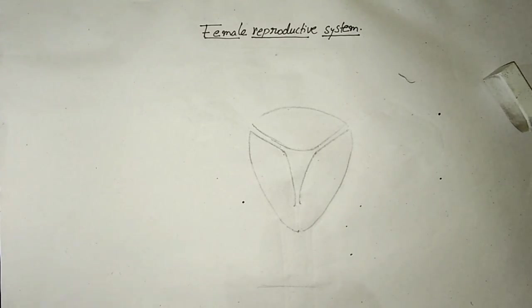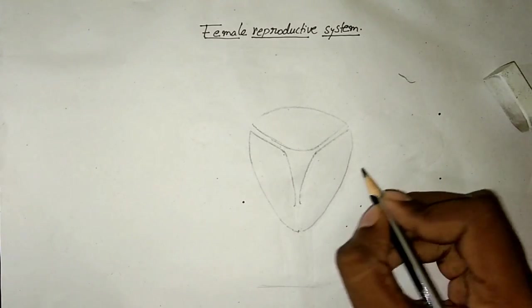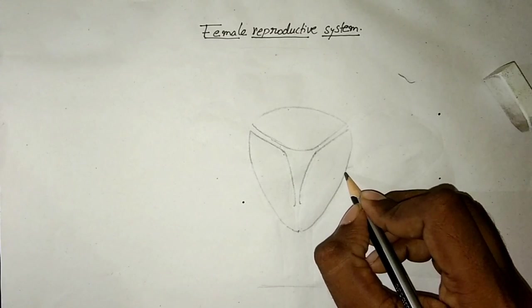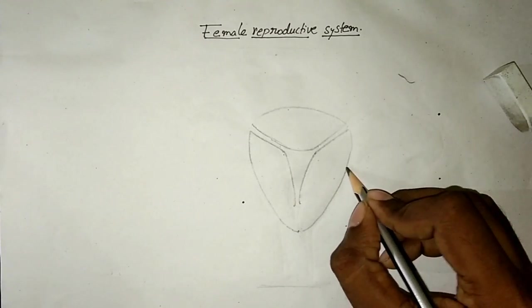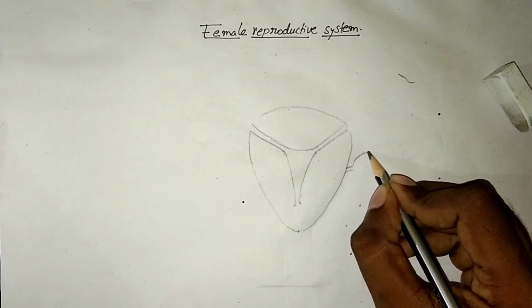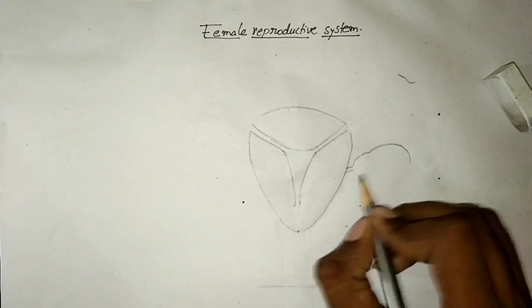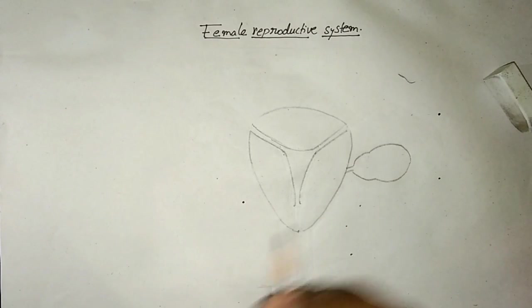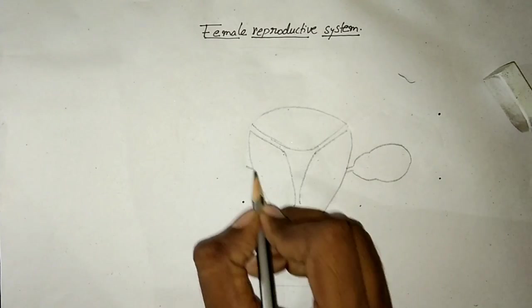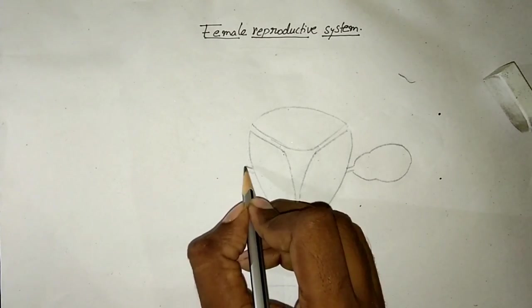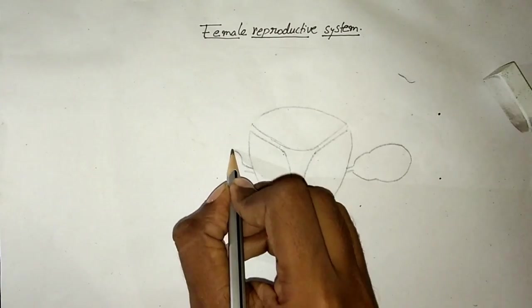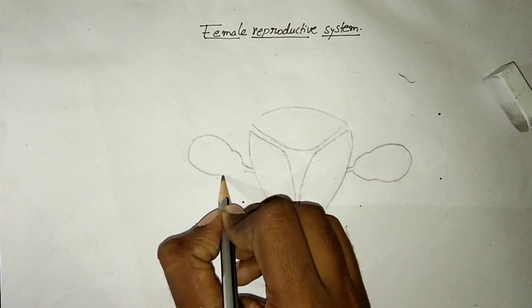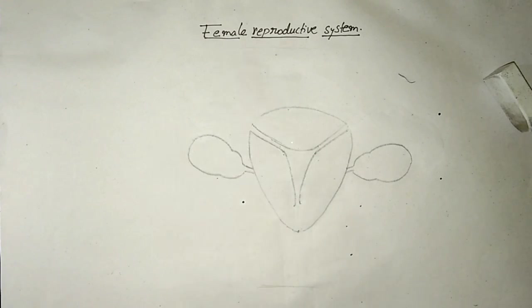Students, now I am going to draw two ovaries on either side. First I draw a stalk like this and I make the ovary as you are seeing here. On the other side, I repeat the same thing once again. Now on both sides, I have the two ovaries.